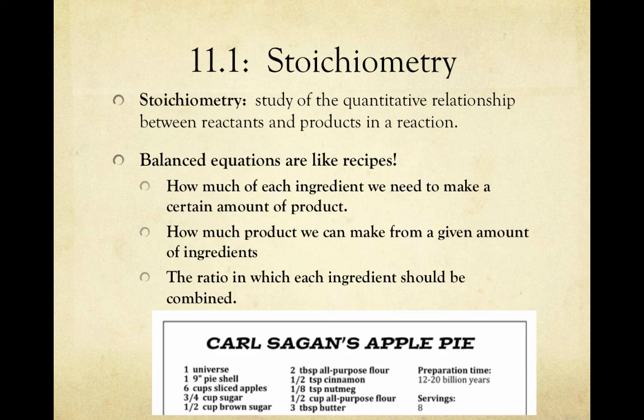If we want to make sixteen servings instead of eight, I not only need double the amount of flour, I need double the amount of everything else, because our ingredients have to go together in the right ratio. We need one pie shell for every six apples, and every three-quarters of a cup of sugar, and every one-half cup of brown sugar, and so on. Everything must stay in the proper ratio.